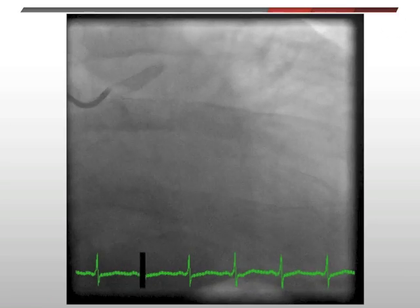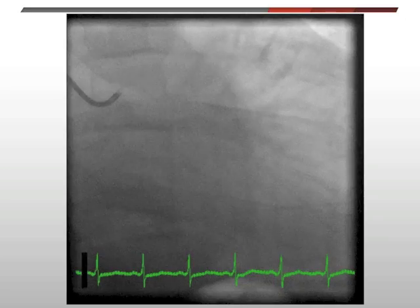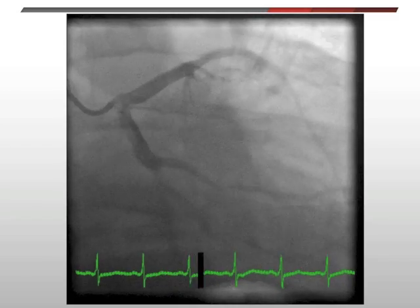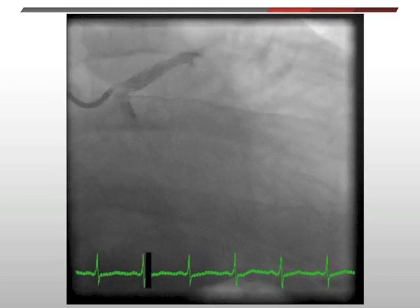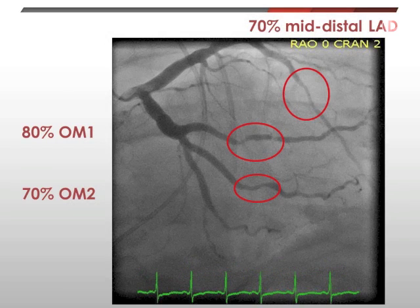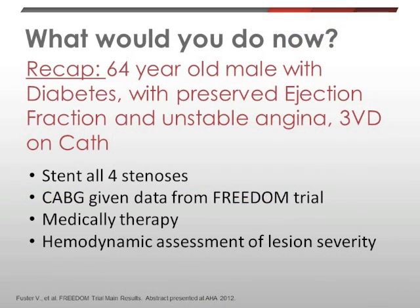Coronary angiography of the left coronary system shows a short and patent left main coronary artery. There is also moderate diffuse disease in the left circumflex system with two discrete stenoses in the OM1 and OM2, both around 70% to 80%. In addition, there is also a 70% stenosis of the mid-LAD, which is a tubular lesion, relatively long, in the moderately diffused LAD.